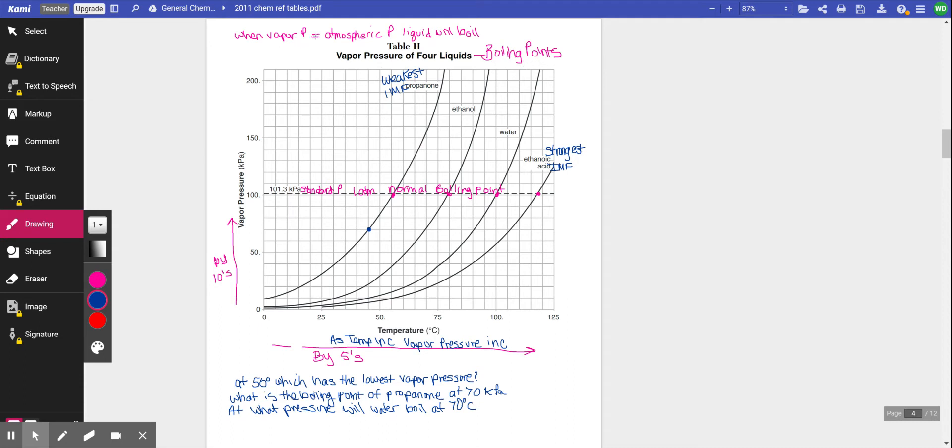So when vapor pressure equals the atmospheric pressure, so that's the vapor coming up off of a liquid, and that equals the pressure on the outside of the liquid, the liquid will boil. That's the definition of boiling.